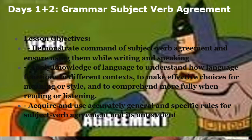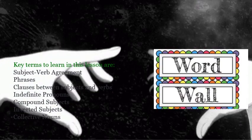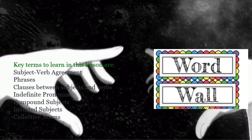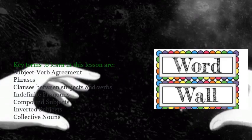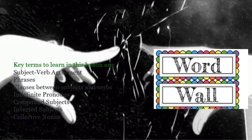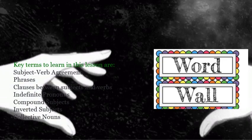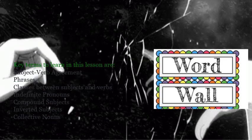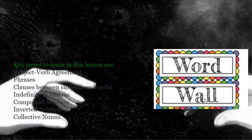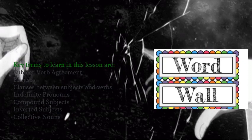You will acquire and use accurately general and specific rules for subject-verb agreement and its antecedent. Some of the key terms we will learn in this lesson are subject-verb agreement, phrases, clauses between subjects and verbs, indefinite pronouns, compound subjects, inverted subjects, and collective nouns. This way, we will know most of the rules for subject-verb agreement.